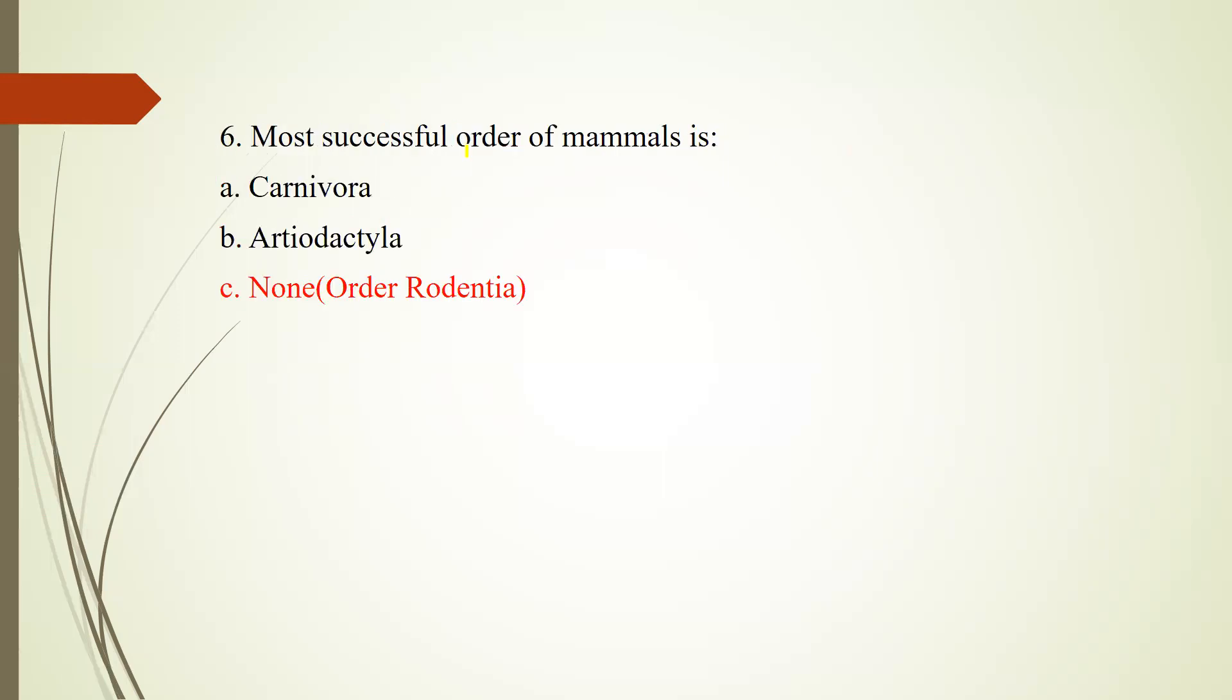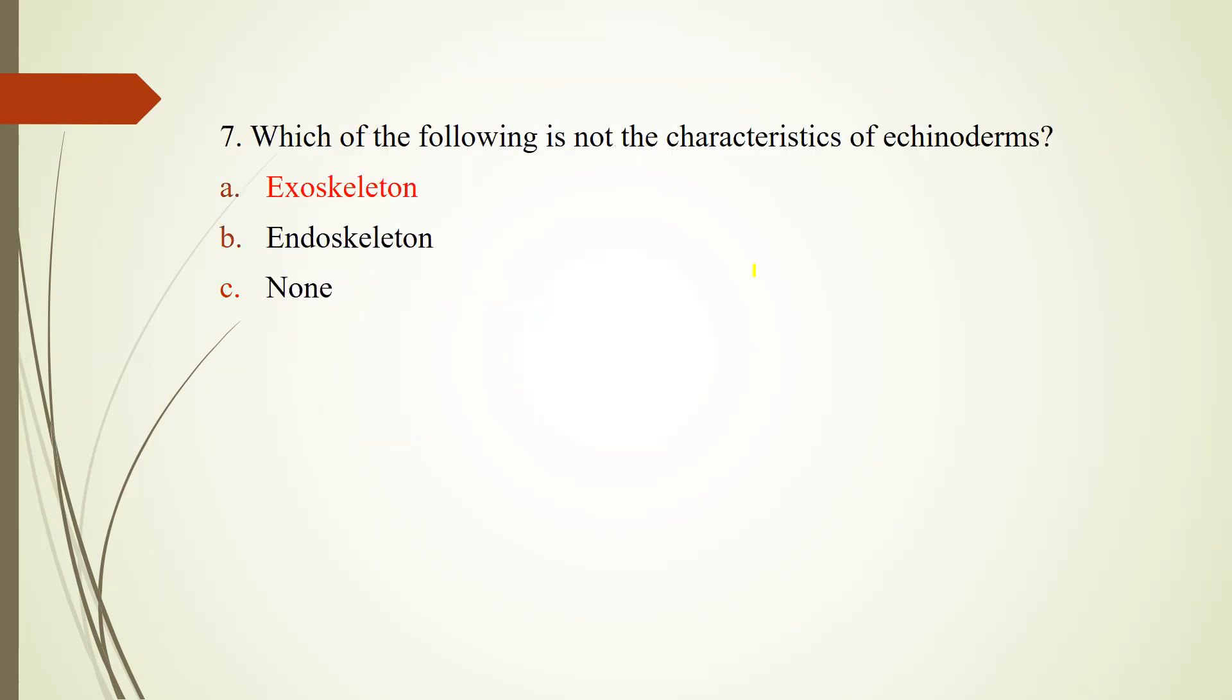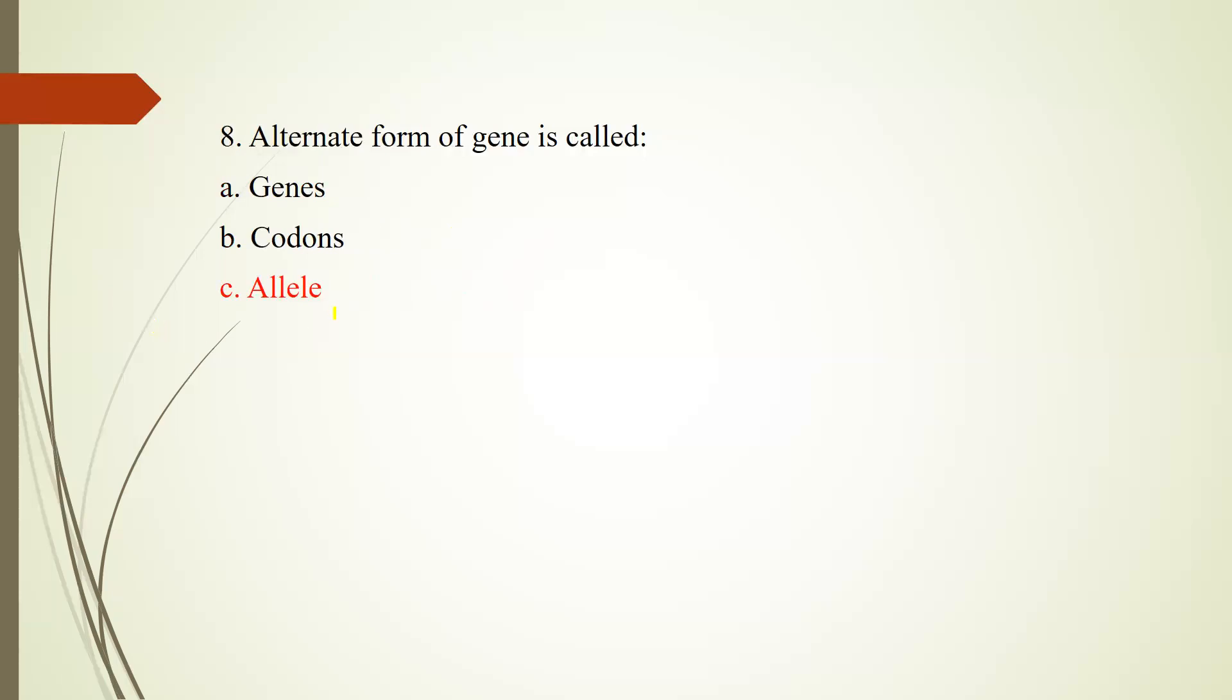Number six: the most successful order of mammals - none of these was the option here. Carnivora, Artiodactyla, these are not the most successful order of mammals. The most successful order is order Rodentia. The option was not given, so I have corrected it here. Number seven: which is not a characteristic of echinoderms? Echinoderms have an endoskeleton, not exoskeleton. Number eight: alternative forms of genes are called alleles.